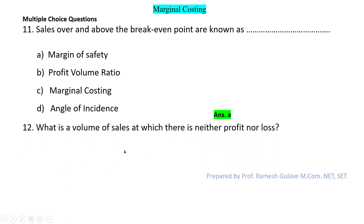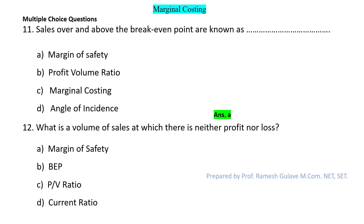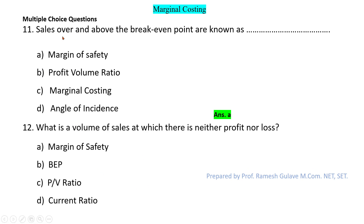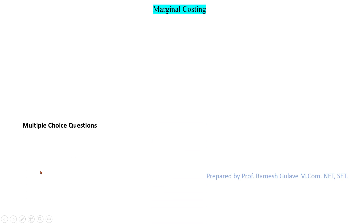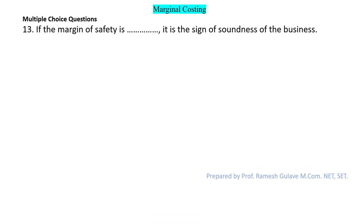The next question says: what is the volume of sales at which there is neither profit nor loss? The volume of sales at which there is neither profit nor loss is the break-even point. So option B — break-even point — is the right answer.